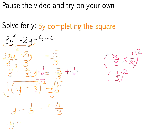So therefore, y will be equal to the positive 4 thirds plus 1 third, or y will be equal to the negative 4 thirds plus 1 third. And if we tidy up, that gives us 5 over 3, or negative 3 over 3, which is equal to negative 1.